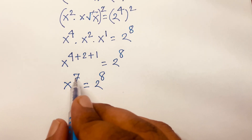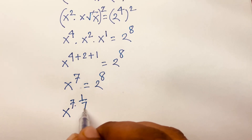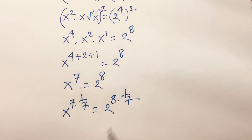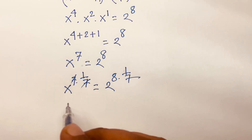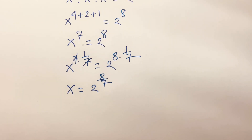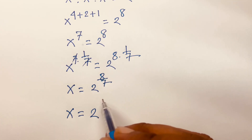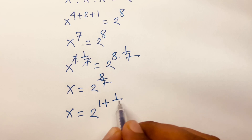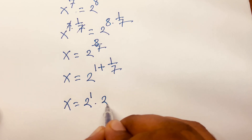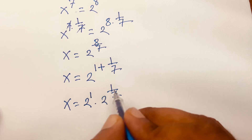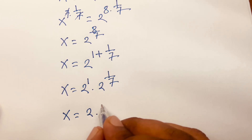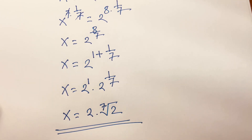To isolate x, I multiply the exponent by 1 over 7 on both sides. The 7s cancel, so we find x is equal to 2 to the power 8 over 7. This can be written as 2 to the power 1 plus 1 over 7, which equals 2 to the power 1 times 2 to the power 1 over 7. So x is equal to 2 times the 7th root of 2. This is our final answer.